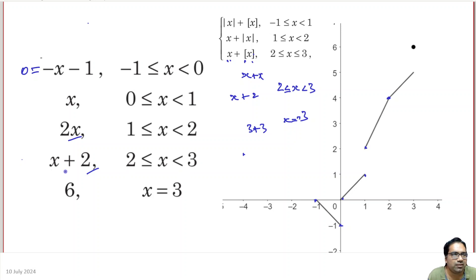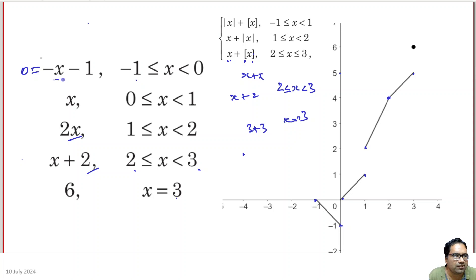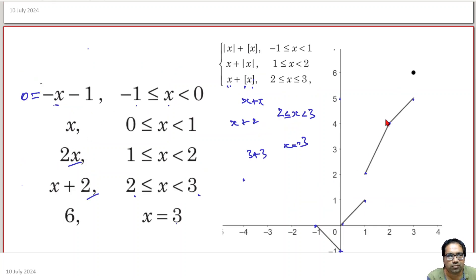Between 2 and 3, the function is x plus 2: it starts at 2 plus 2 which is 4, and ends at 3 plus 2 which is 5. So the graph goes from 4 to 5 over the interval 2 to 3. And when x equals 3, the value is 6 — that is an isolated point at 6. So the graph goes from minus 1 to 0 as minus x minus 1, from 0 to 1 as x, from 1 to 2 rising from 2 to 4, from 2 to 3 rising from 4 to 5, and the isolated point at (3, 6).